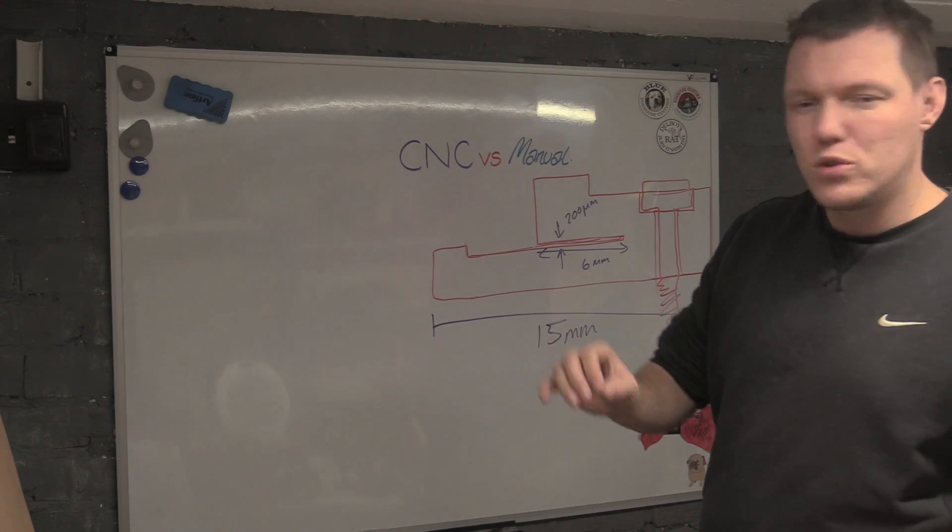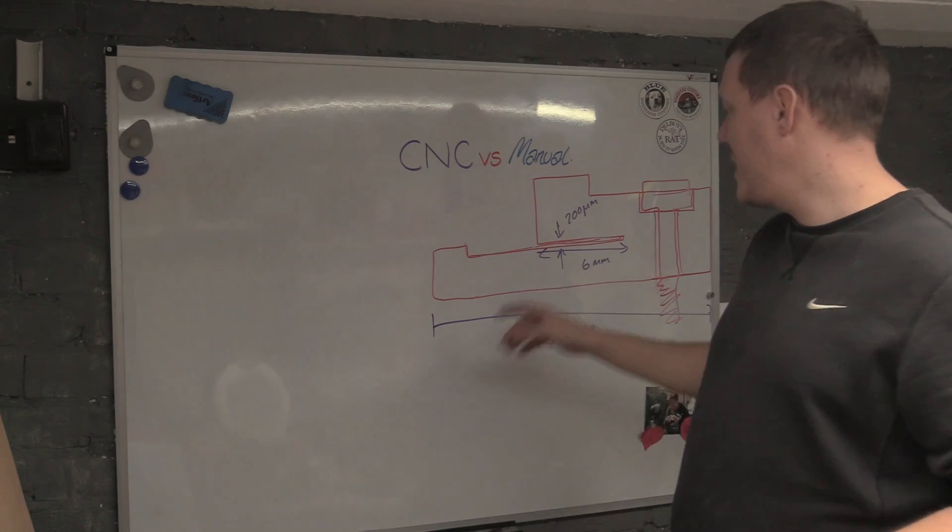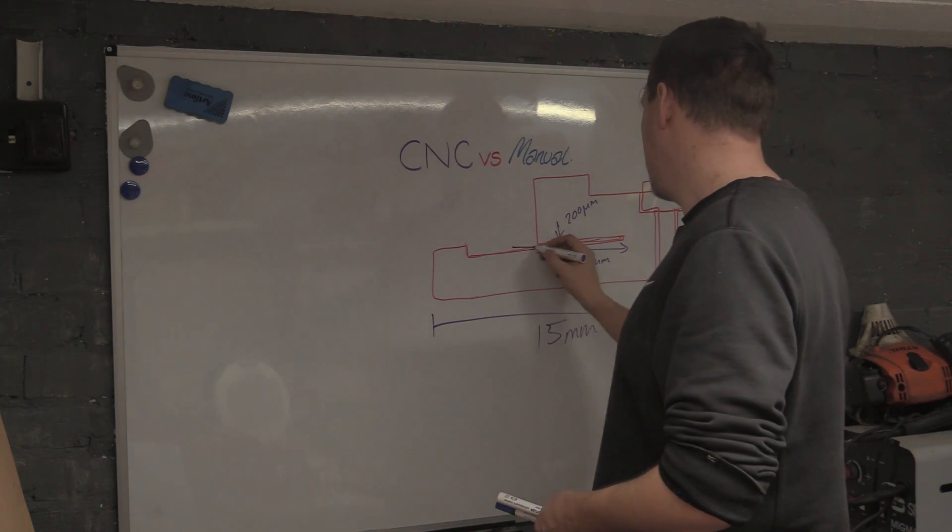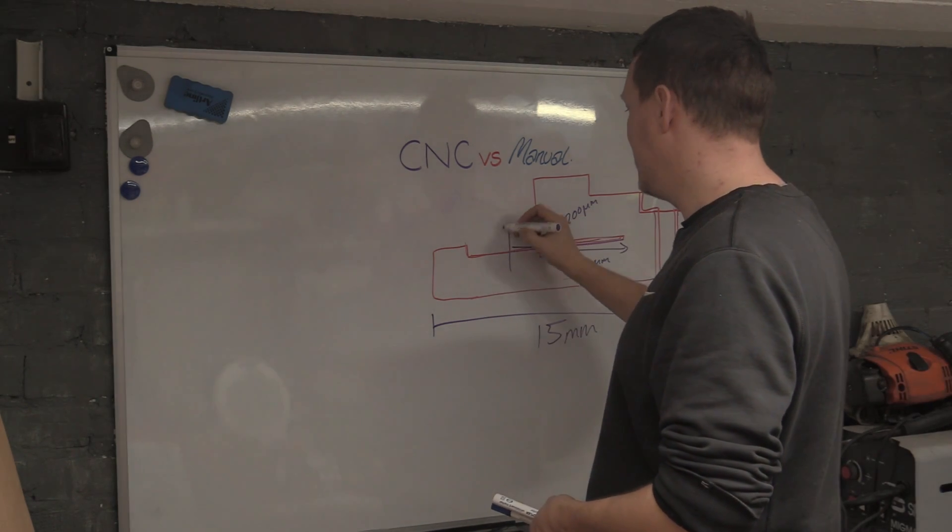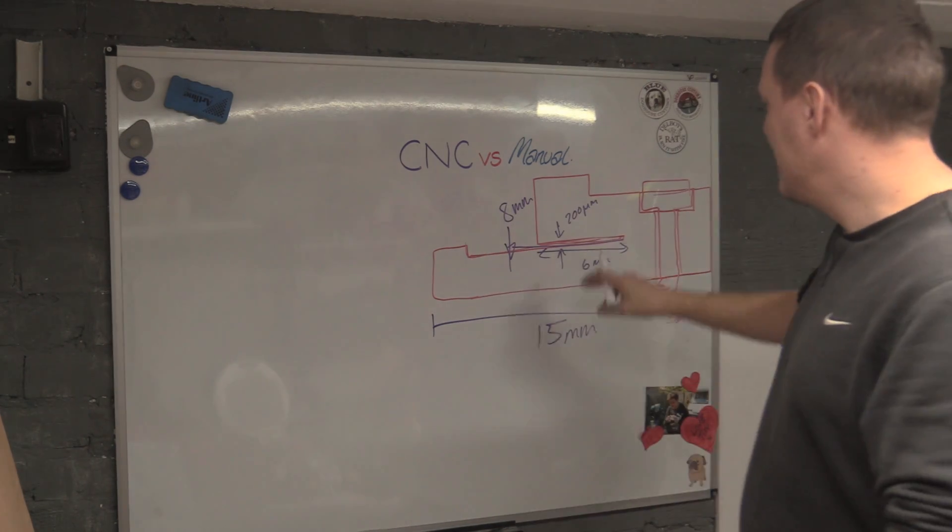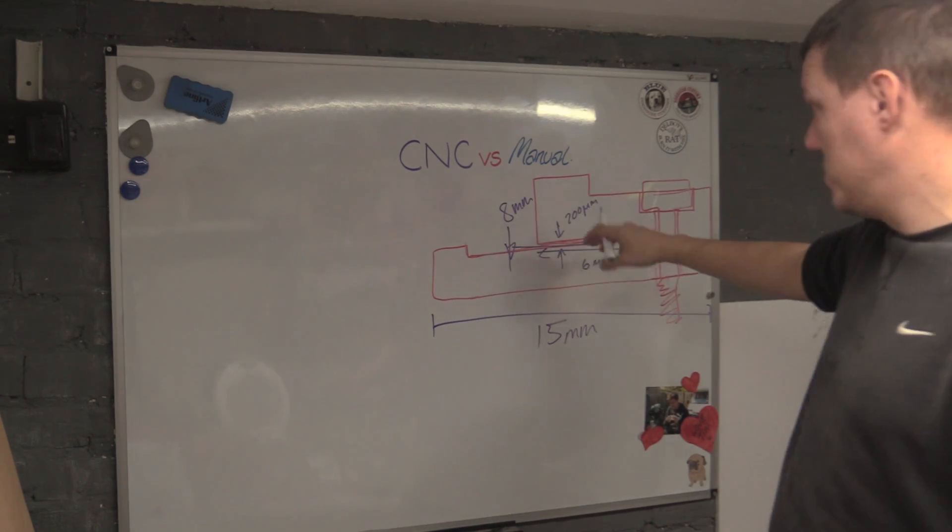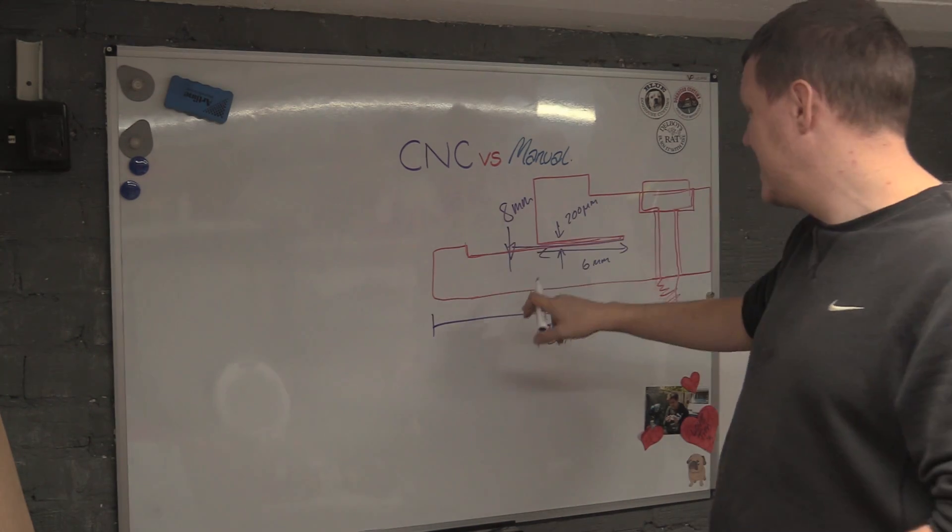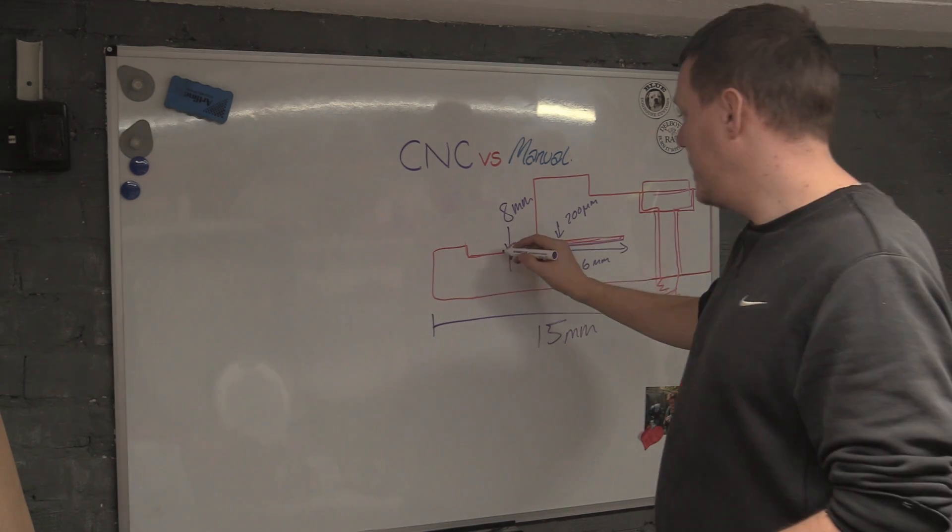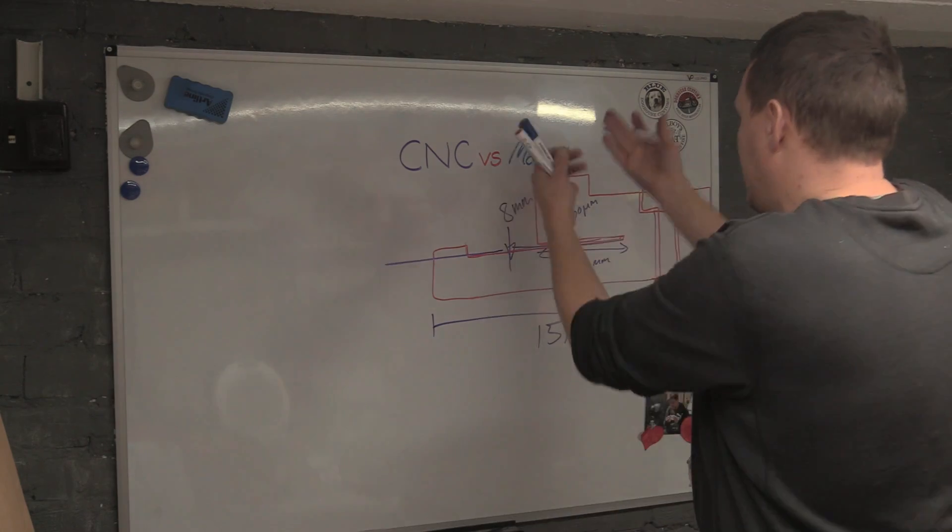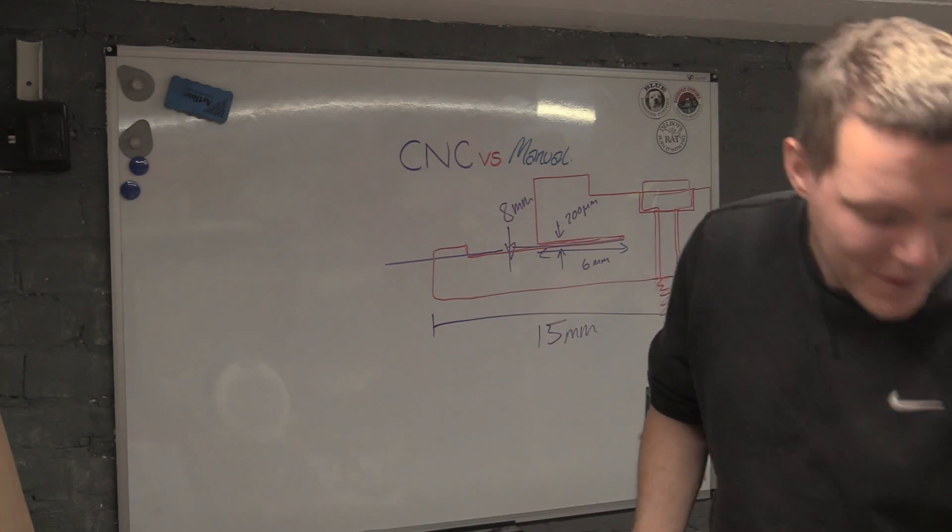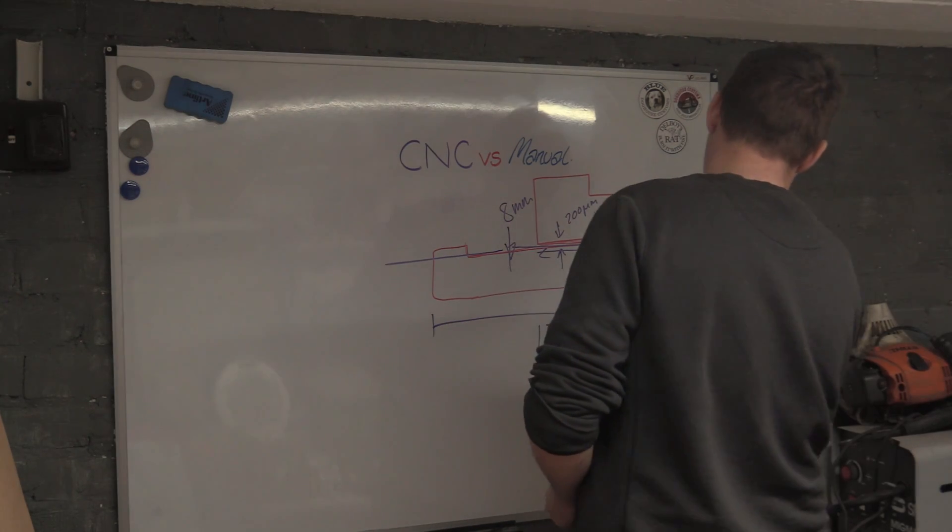No one has a 200 micron slitting saw that has a diameter, right, of, well you'd need clearance wouldn't you? So you'd need I don't know, eight to the center, eight millimeters. So we're looking for a slitting saw that is less than 200 microns or 200 microns thick, eight millimeters in radius. Yeah but it can't go here and cut this side. There's no tool that does that. And this is the problem: CNC and stuff makes people believe that anything is possible.